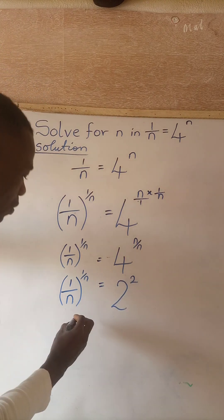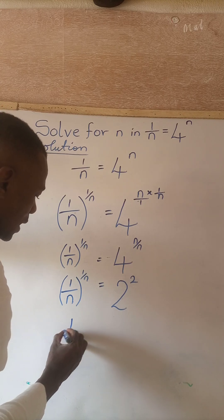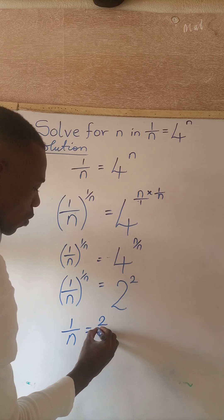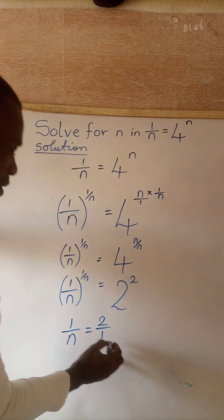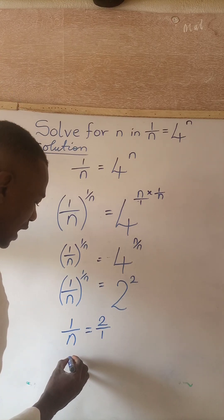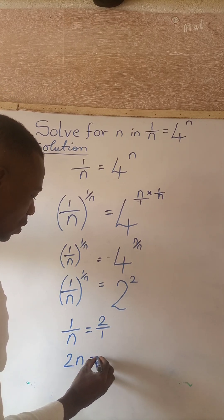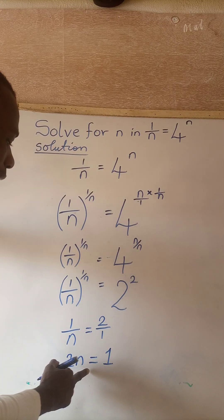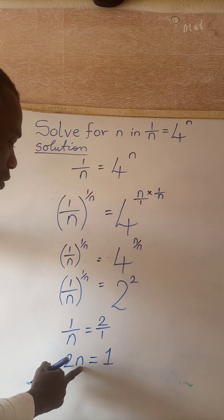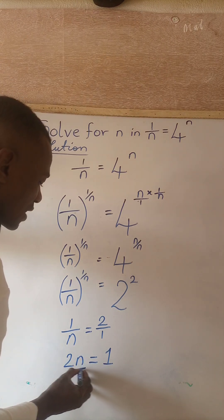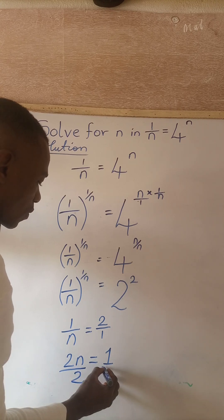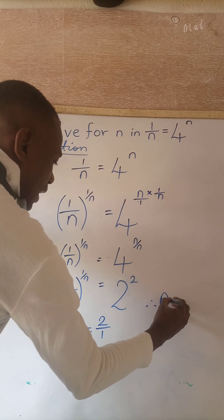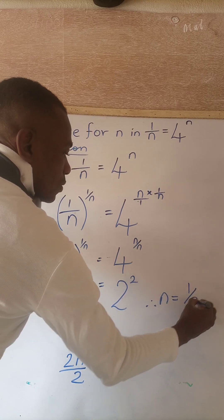So my next line of action will be 1 over n is equal to 2 over 1. And when I cross multiply, we now have 2n is equal to 1. Meaning that when I divide both sides by coefficient of n, which is 2, if I divide both sides by 2, we will now have n as 1 over 2.